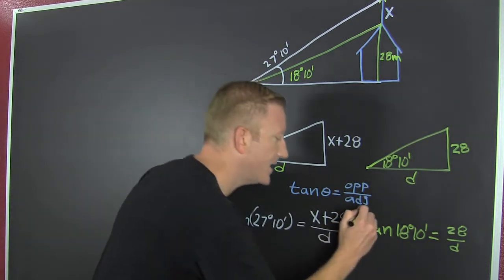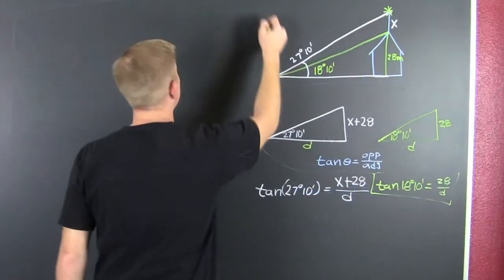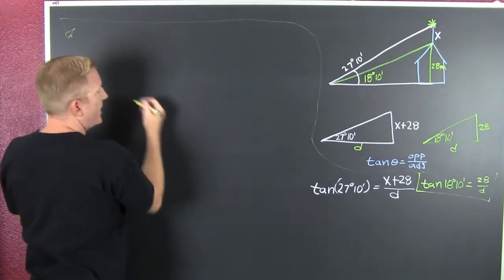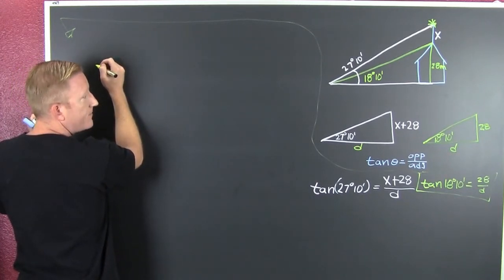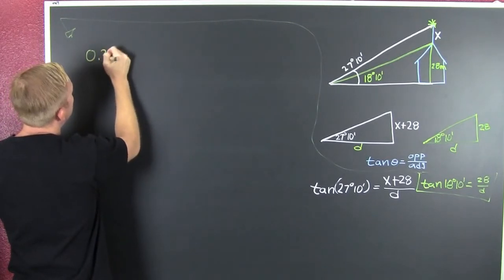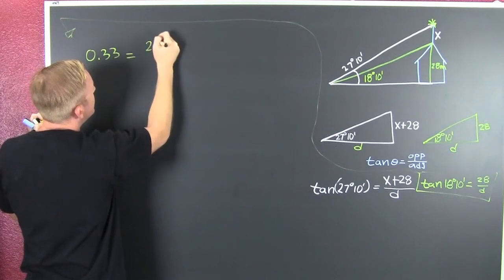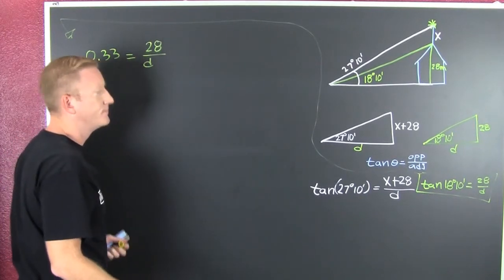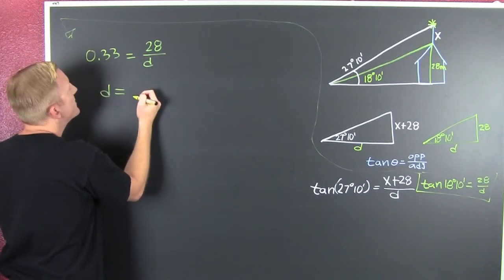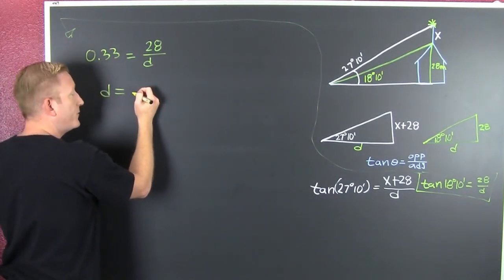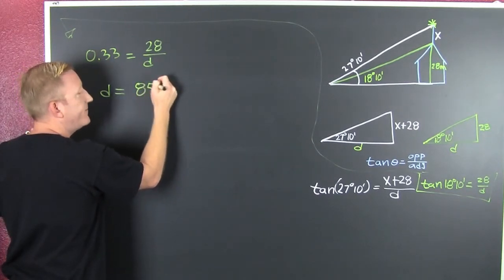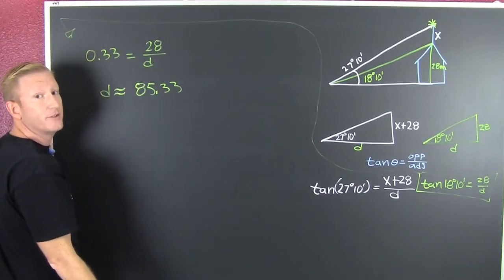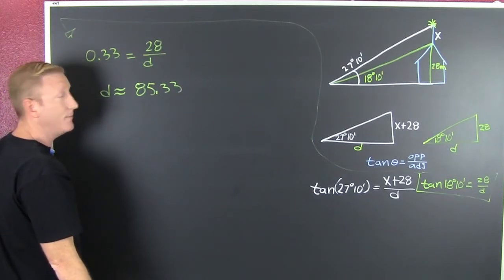I suggest substitution. I'm going to use that to find out what D is. The tangent of 18 degrees 10 minutes is about 0.33, and that's going to be 28 over D. Let's solve for D. D is going to be 28 over 0.33, and 28 over 0.33 is going to be about 85.33. Do those calculations — my calculator handles degrees, minutes, seconds; yours might. Convert those into decimal degrees and you'll get the same thing.